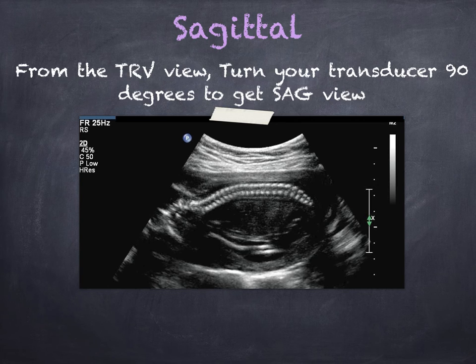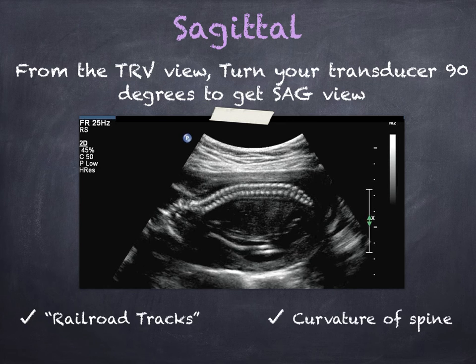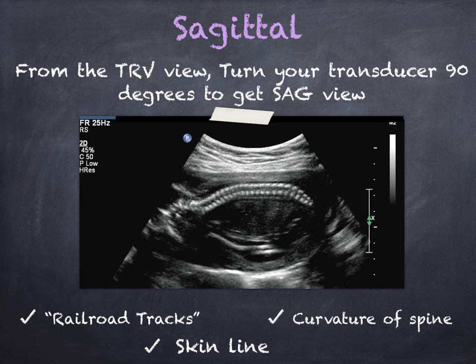Here's the image of that sagittal view you're looking for. You see the railroad tracks, the nice curvature of the spine, and an enclosed skin line.